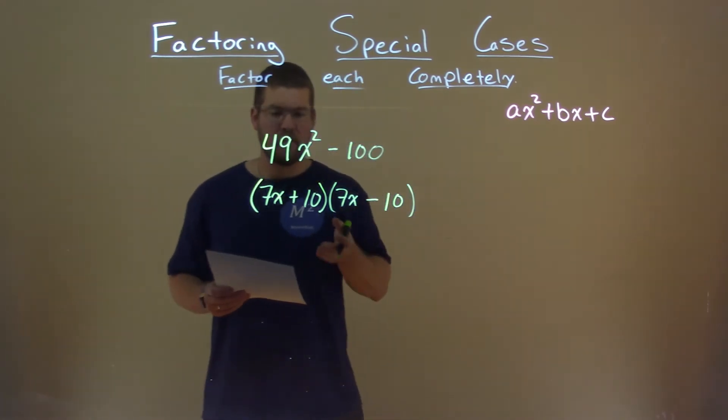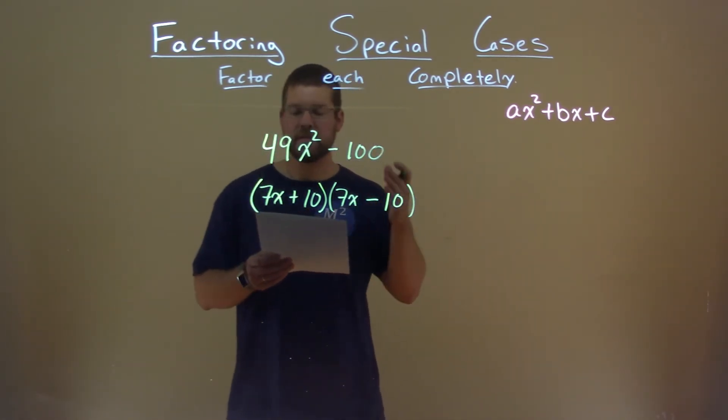And so this is our final answer, 7x plus 10 times 7x minus 10.